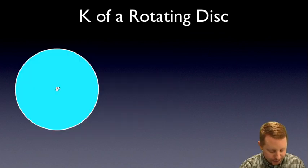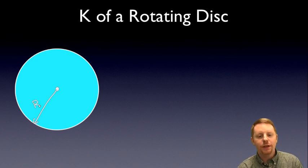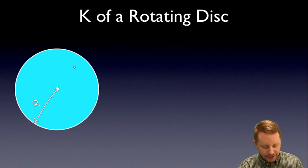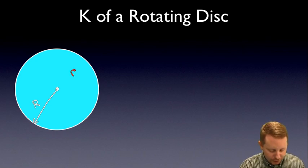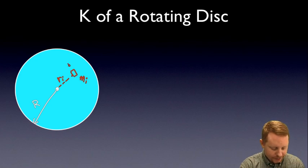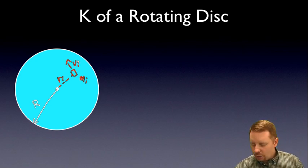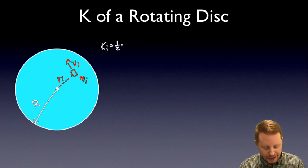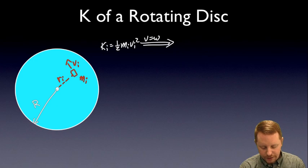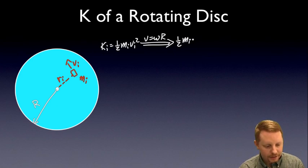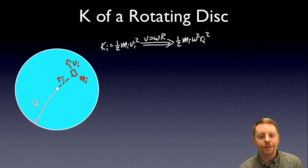If we have a rotating disk with some radius capital R, finding its kinetic energy is a bit tricky because the disk has various velocities depending on how far you are from the center of rotation. So we take a little piece of the disk — call that mass i, at some radius ri, with some linear velocity vi. The kinetic energy of that little piece is one-half mi vi squared. We can replace that v with omega r, the rotational velocity times the radius, so this becomes one-half mi times omega squared times ri squared.